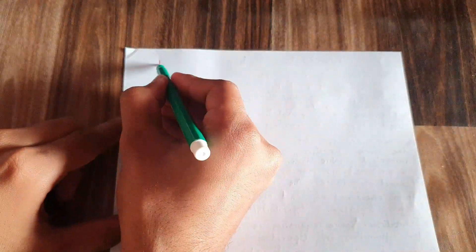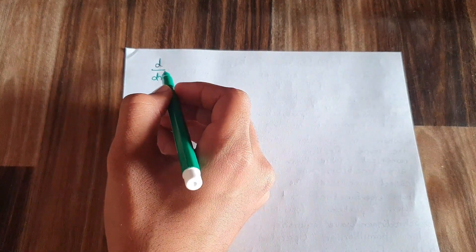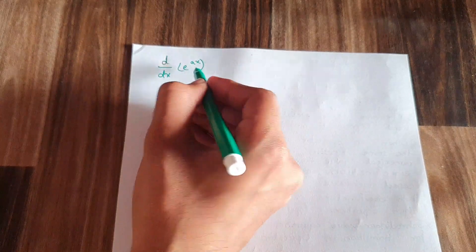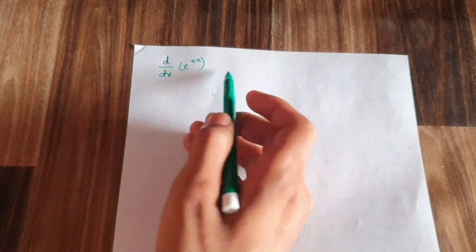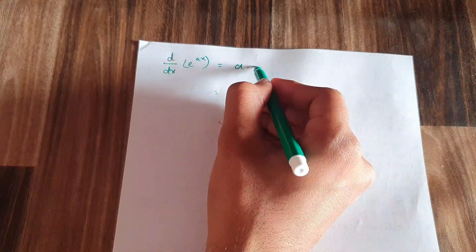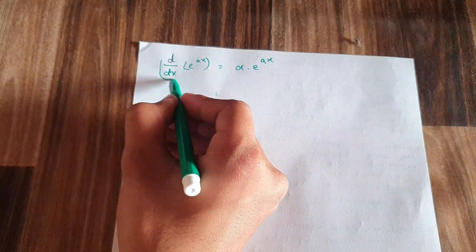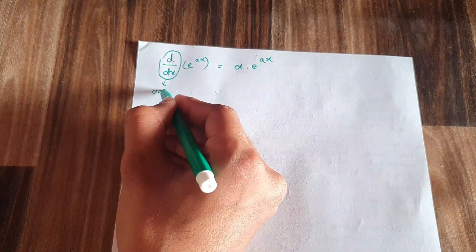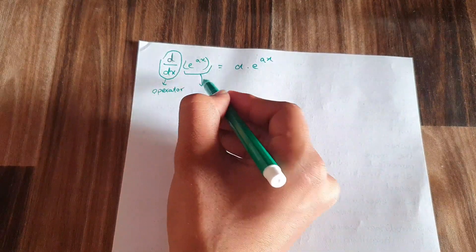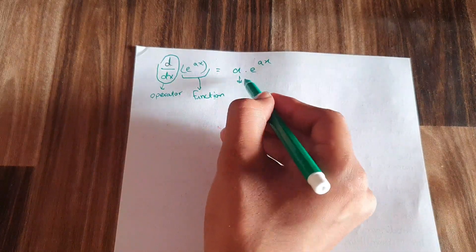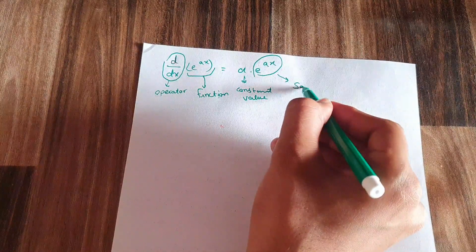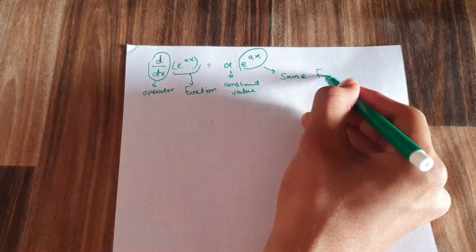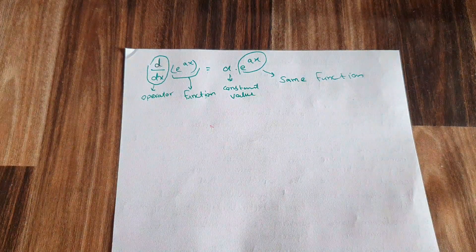Taking an example: d/dx · e^(ax). I want to prove that this equation is an eigenequation. Here d/dx is the operator and e^(ax) is the function. Taking the derivative, it comes out to be equal to a · e^(ax). Here 'a' is the constant value (eigenvalue) and e^(ax) is the same function as on the left hand side. So this equation follows the structure of an eigenequation.